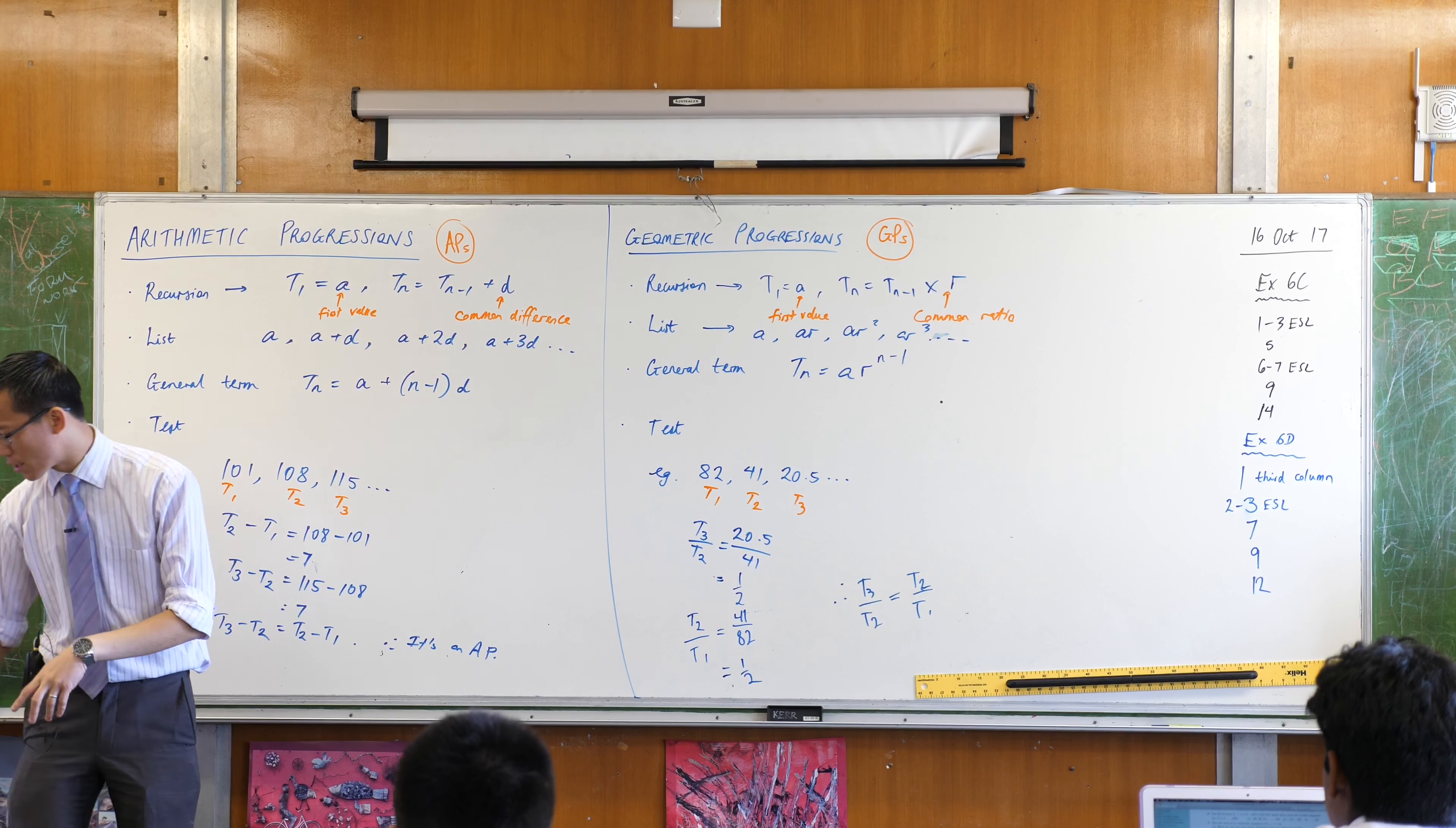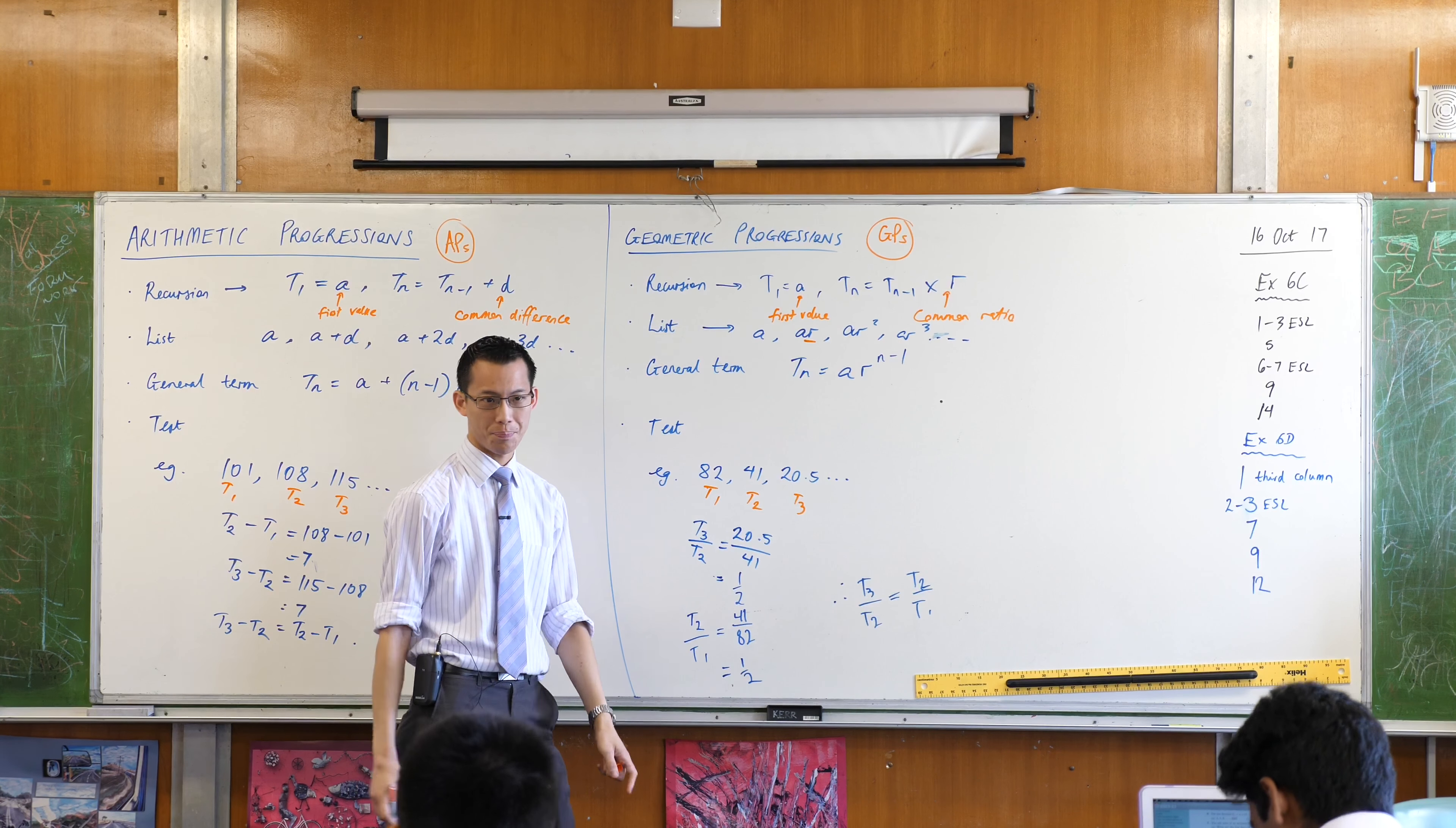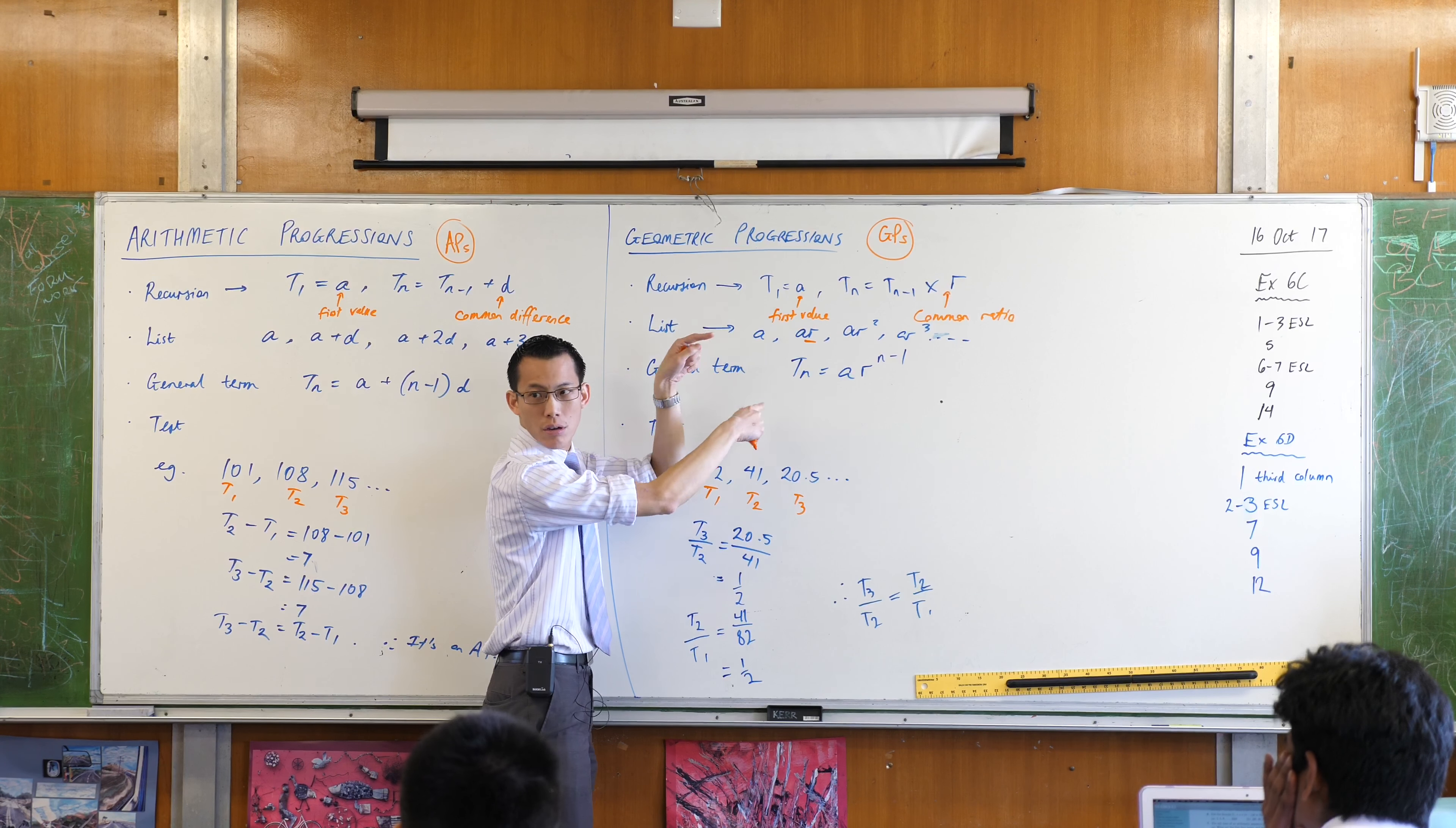However, I would avoid doing that because what I'm searching for is this. I'm searching for R. Now, if I want to find R, then you divide a later term by an earlier term. You don't go the other way around.